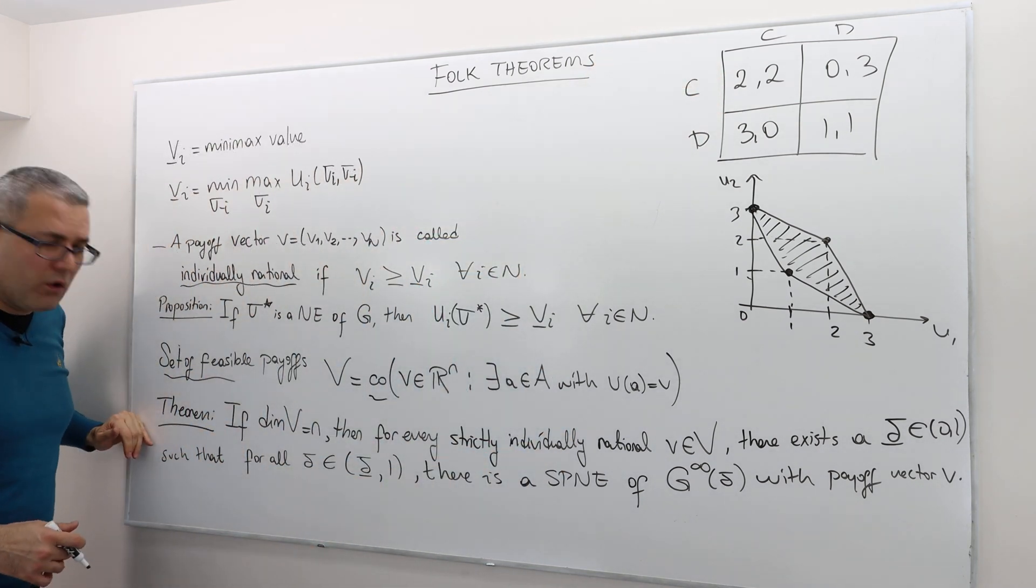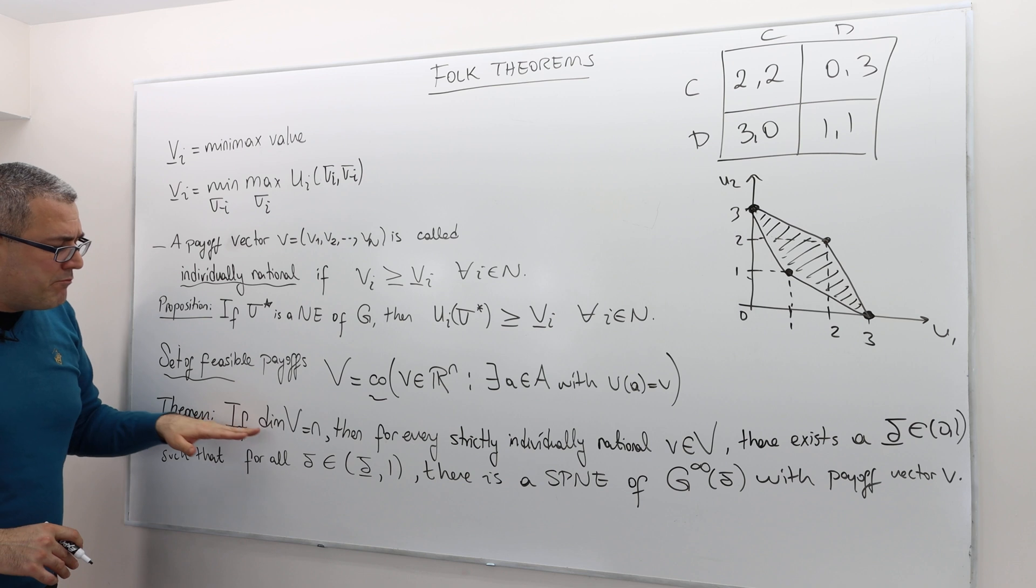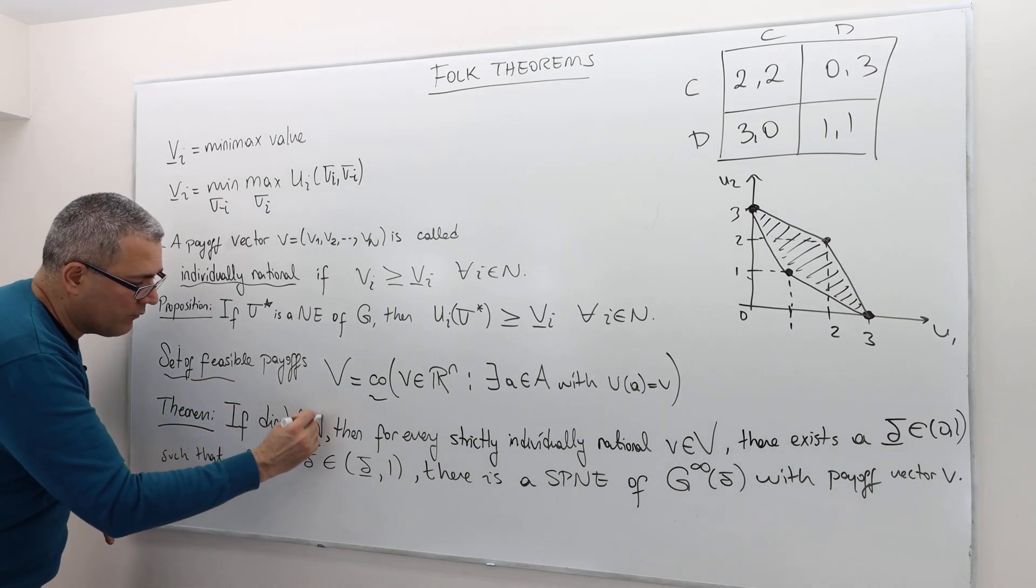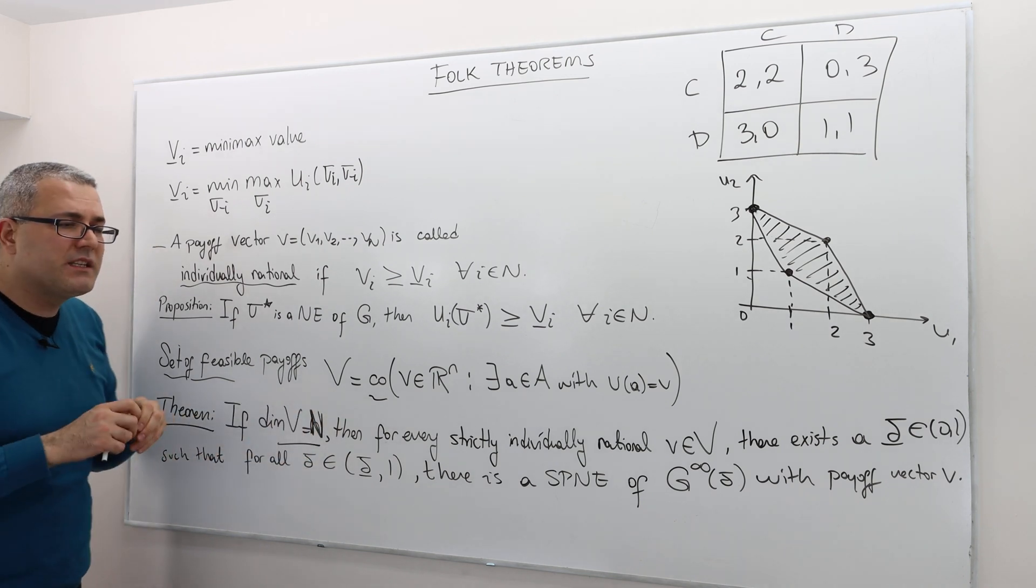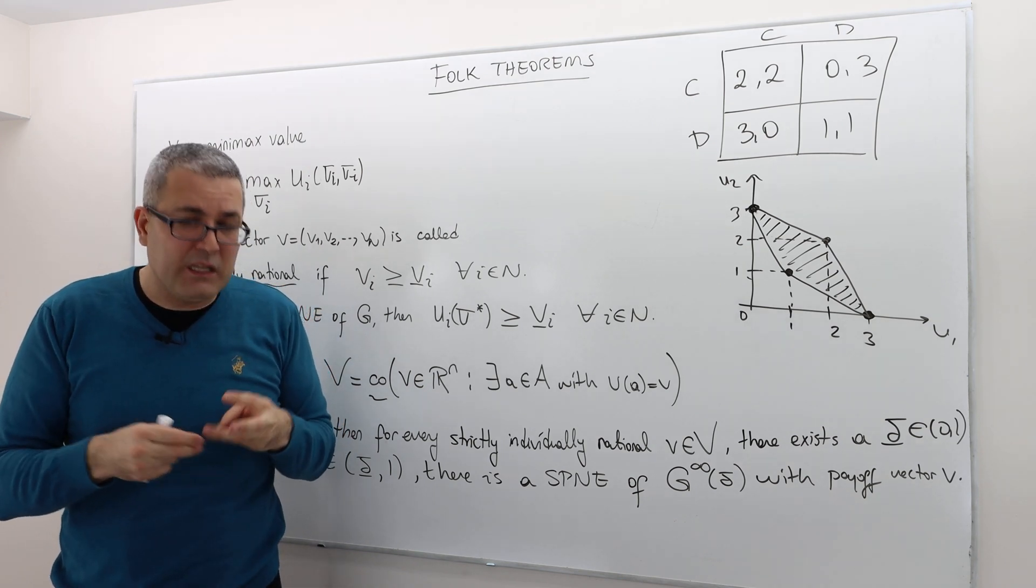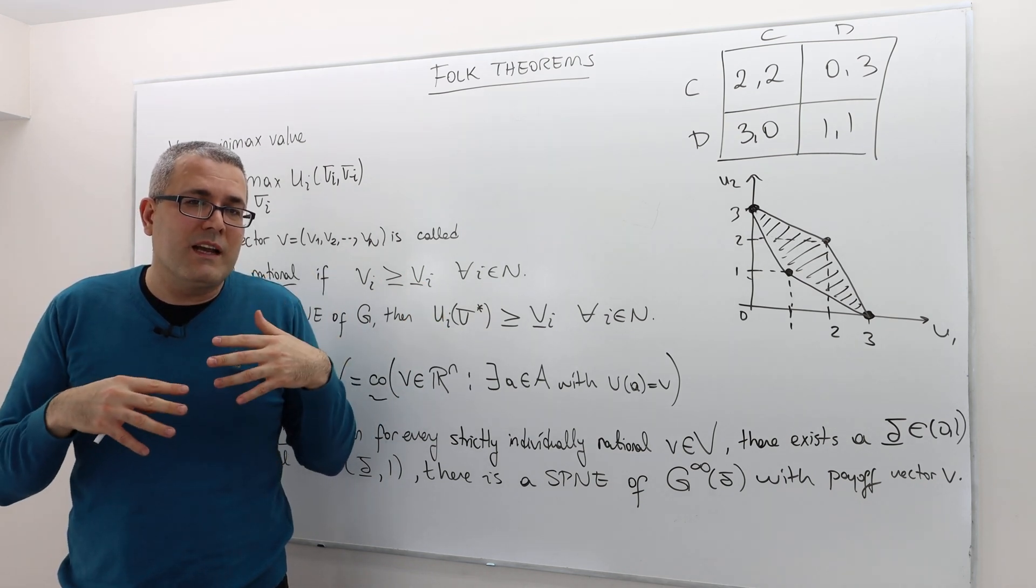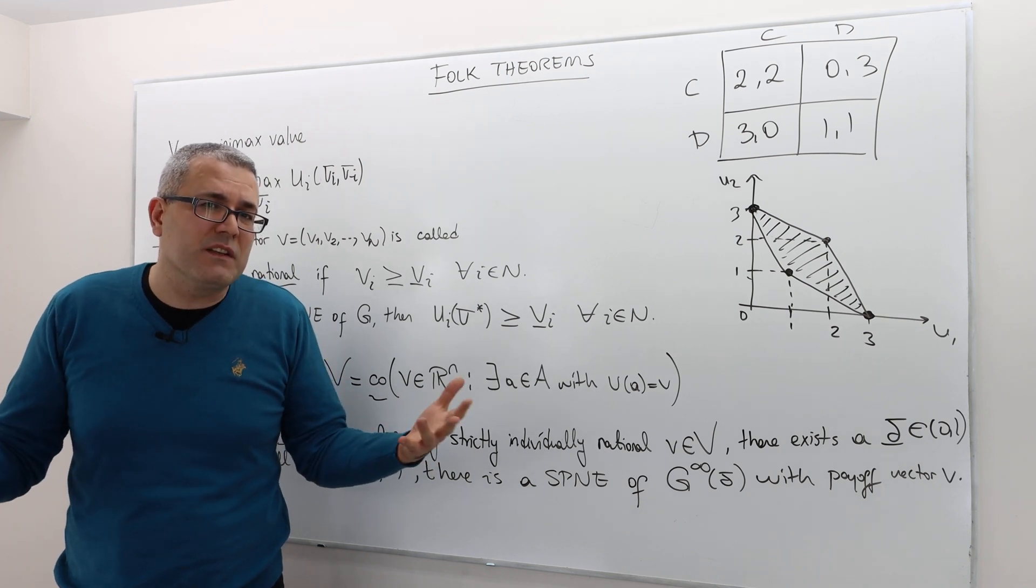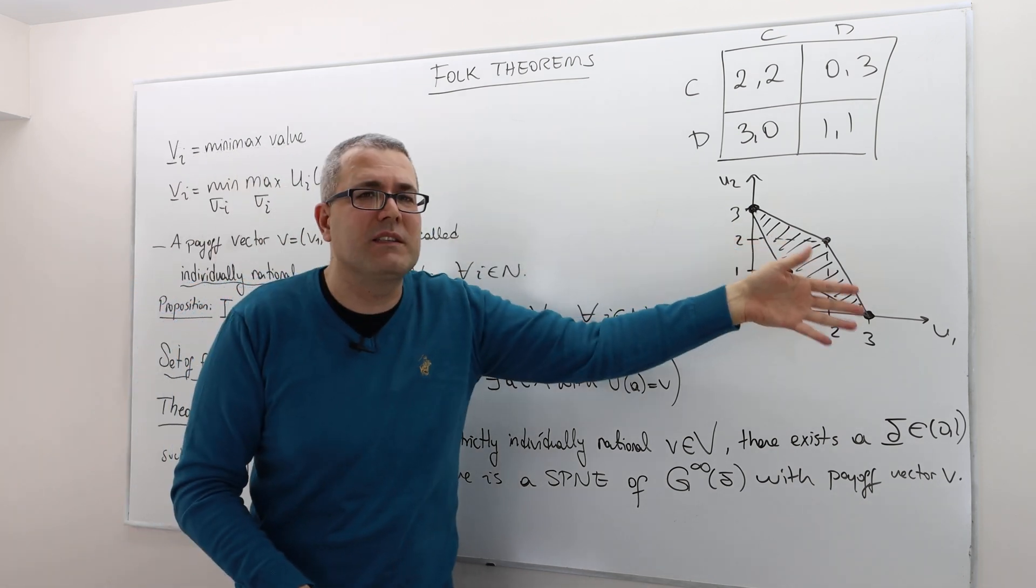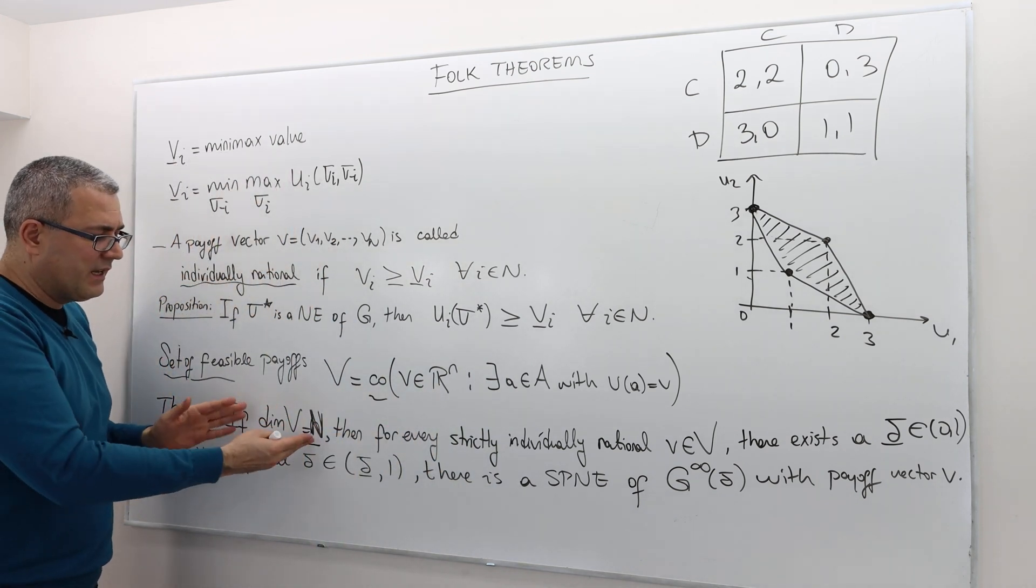All right. So here's the Folk theorem. There are many of them, but that's sort of the fundamental one. If the dimension of the set of feasible payoffs is equal to N, which is the number of players. So what is the dimension of a set? Well, I don't know if you remember from linear algebra, but every vector space, we talk about the spanning set. So the dimension of a set. So for example, R^2, the vector space has dimension of two, right?